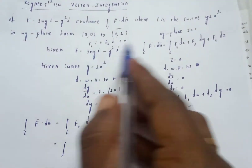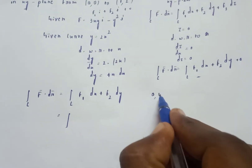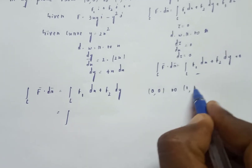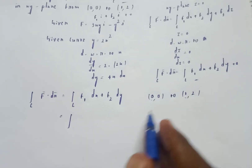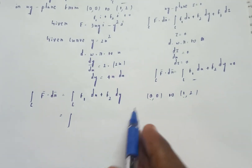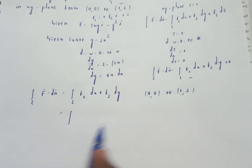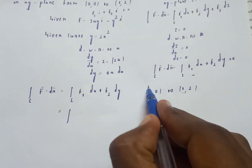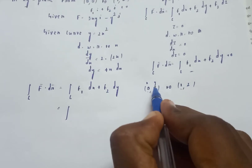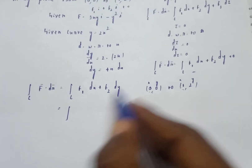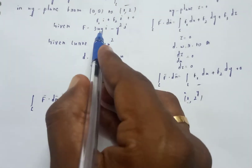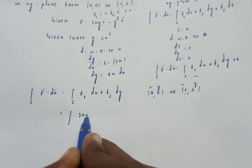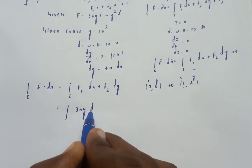Matching F components: f1 i plus f2 j. The limits are from point (0,0) to (1,2). We express everything in terms of x, substituting x and y values into f1 and f2.